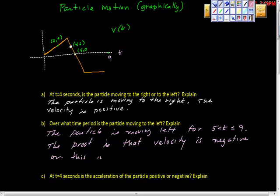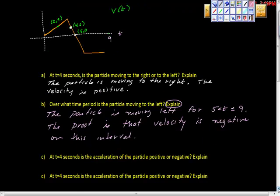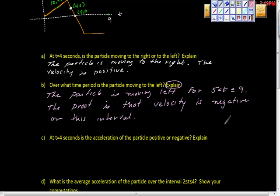The proof is that velocity is negative on this interval. Remember: without an explanation you're missing a bunch of your points, so be careful. Next, it asks: at t equals four seconds, is the acceleration of the particle positive or negative? Explain.